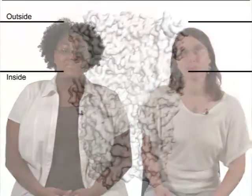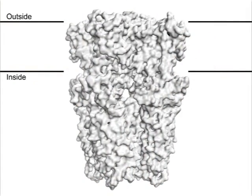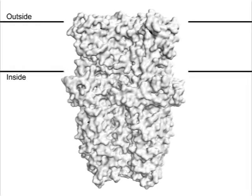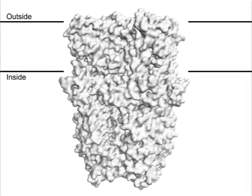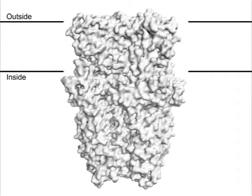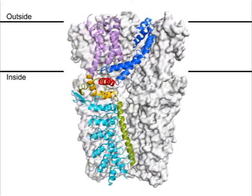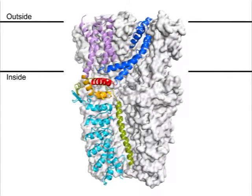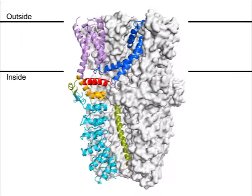In this video, we'll provide a quick tour of the new structure, highlighting its main structural features. Here is a surface representation viewed from the side, with the cell membrane perpendicular to the screen. The outside of the cell is at the top. TRPA1 is a tetramer, and now we reveal one subunit as a colored cartoon.